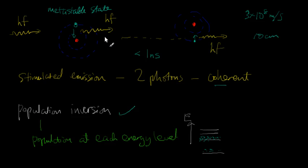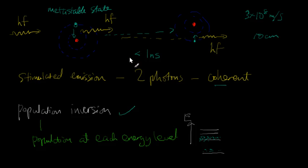So we're talking about a time scale of less than a nanosecond for the photon to travel through the lasing material — the material in the laser where we try to create this population inversion and stimulated emission. The metastable state, the excited electrons in atoms, have to stay up in the higher state for much longer than 1 nanosecond.